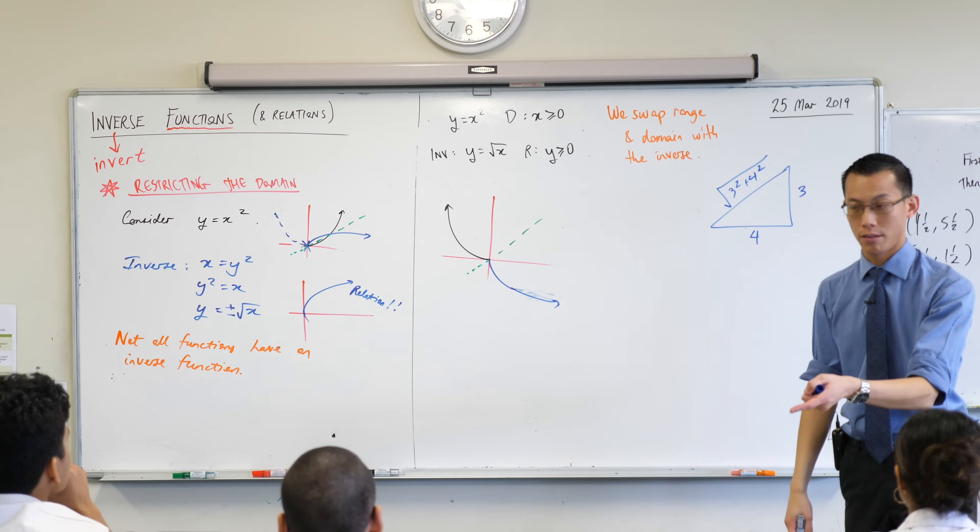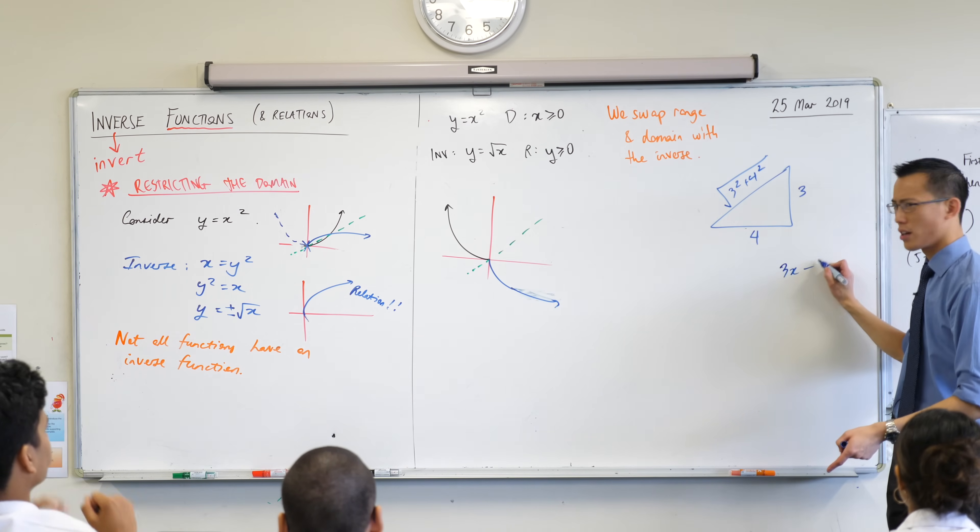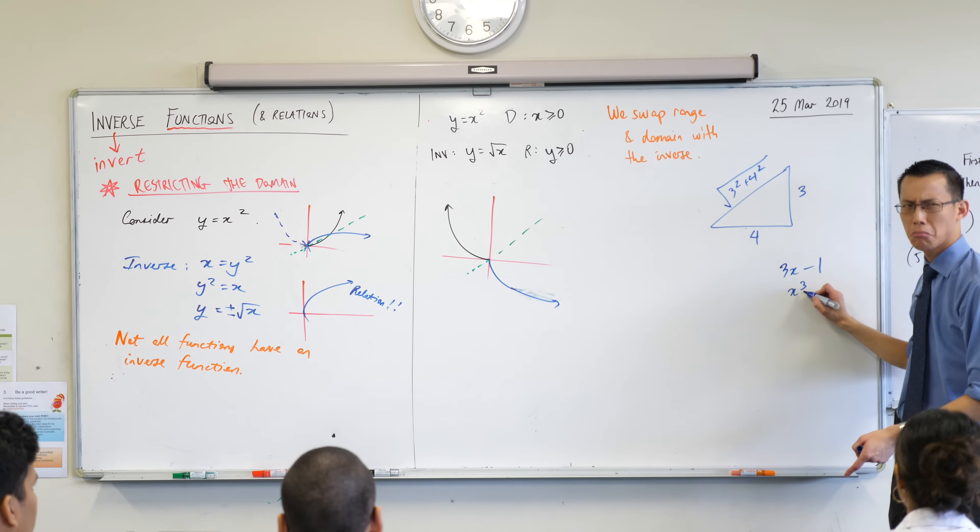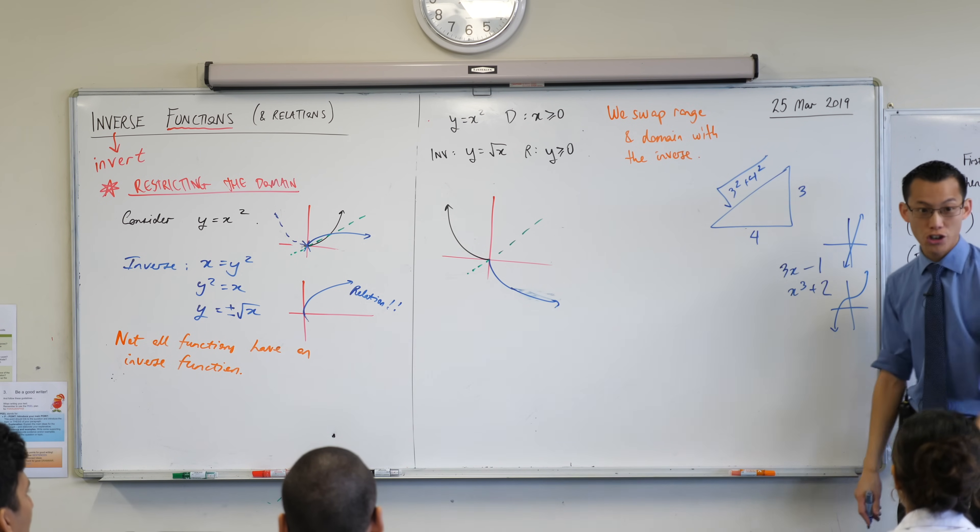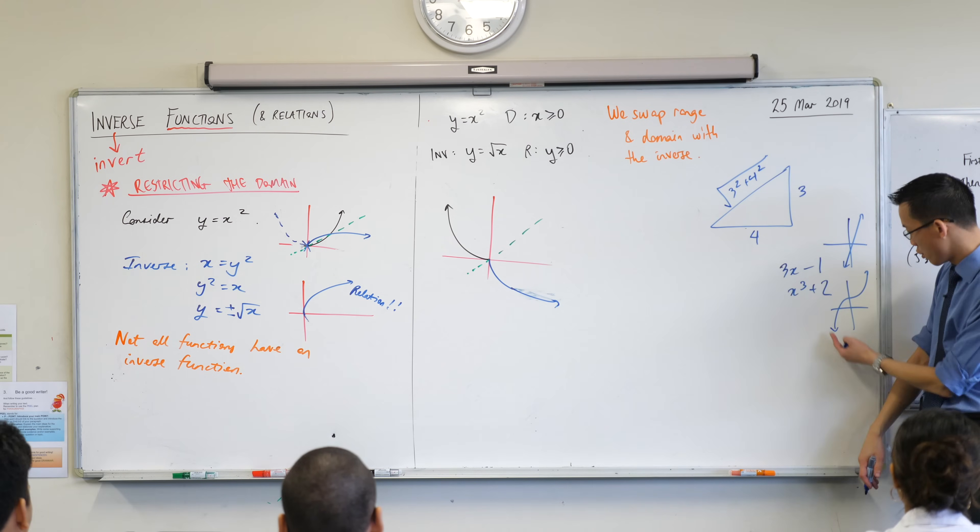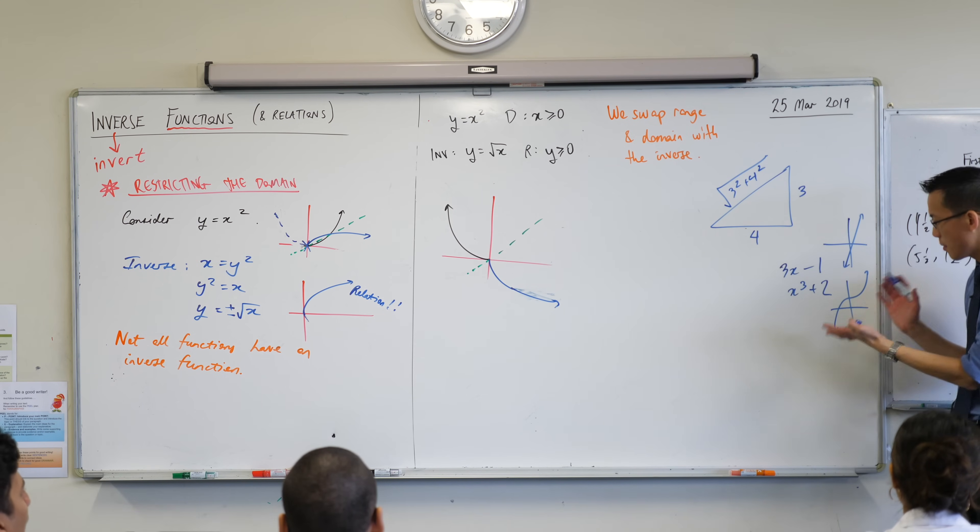The two graphs that we started with, 3x minus 1, I think, and what was it? x cubed plus 2. The reason I gave you these two is because neither of them turns. Did you notice that? You can go back to where you drew these on your page. You're like, there's no turning point.